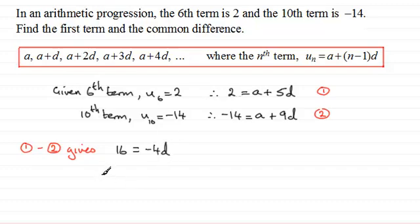And if we divide both sides by -4, we end up with d equaling 16 divided by -4, which is that d, that common difference, equals -4.